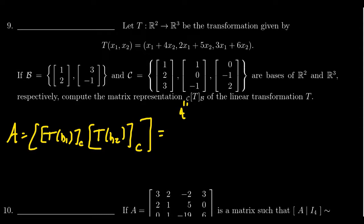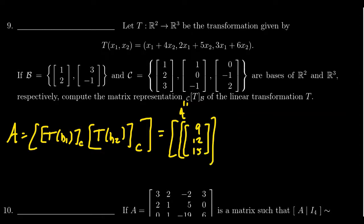Let's plug b1 = (1, 2) into the transformation. We get 1 + 8 = 9 for the first coordinate, 2 + 10 = 12 for the second coordinate, and 3 + 12 = 15 for the third coordinate. So T(b1) = (9, 12, 15). We need to express this vector in C coordinates.